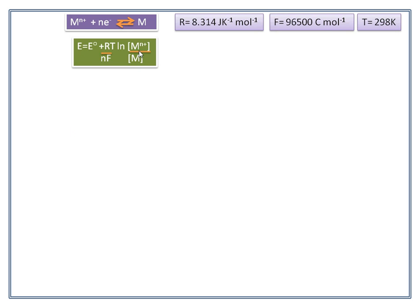Now we convert ln into log and we substitute R, F and T values. We get Nernst equation equals E° plus 0.0591 divided by n log, concentration of M^n+ divided by concentration of M.